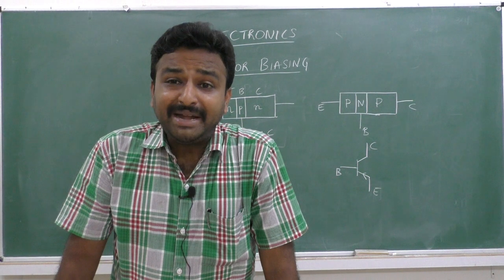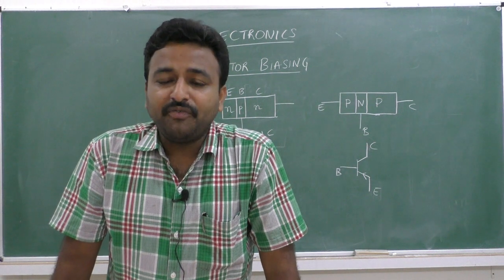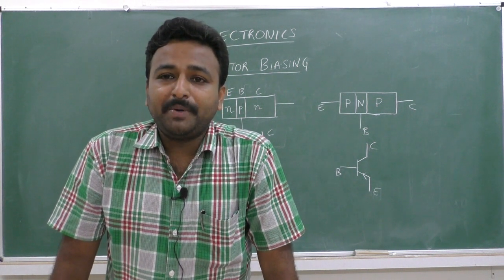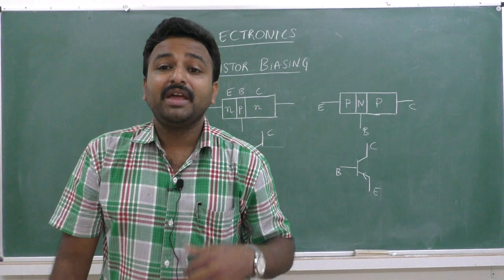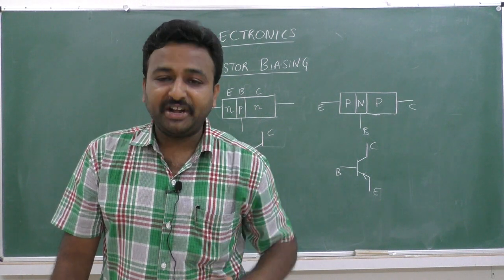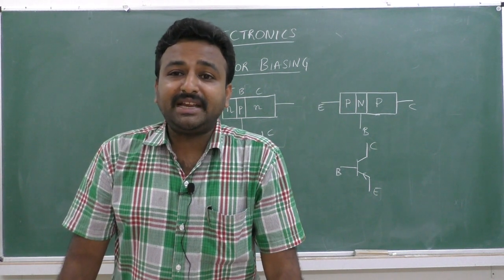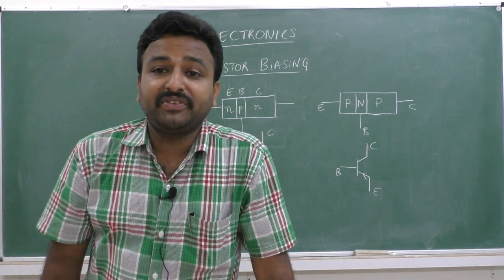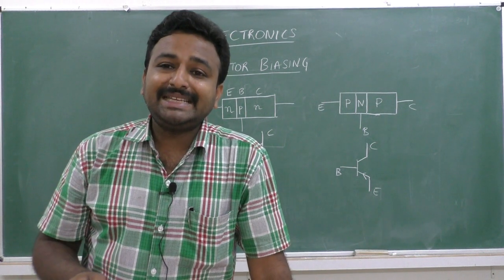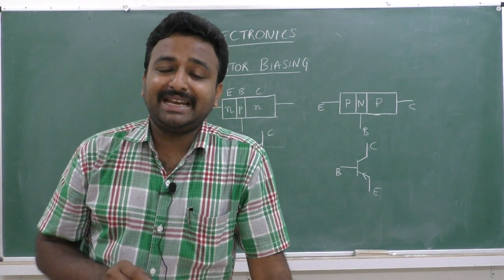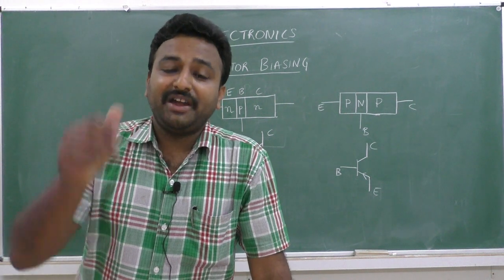The emitter region of a transistor is a moderate-sized region with a high level of doping. Since it is doped with a high doping concentration, it is capable of emitting more number of majority charge carriers.